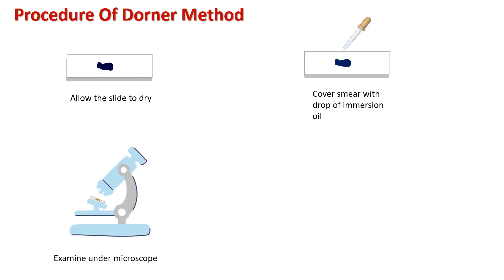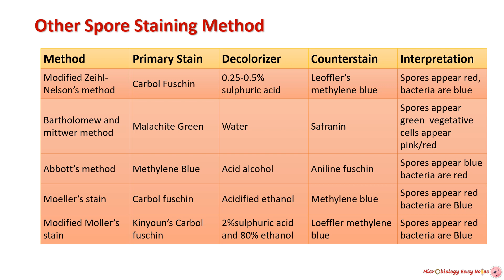There are other methods of spore staining. In the modified Ziehl-Neelsen method, the primary stain is carbolfuchsin, decolorizer is 0.25–0.5% sulfuric acid, and counterstain is crystal violet or methylene blue; spores appear red and bacteria appear blue. In the Wathlow, Mu and Mitver method, the primary stain is malachite green, decolorizer is water, and counterstain is safranin; spores appear green and vegetative cells appear pink or red.